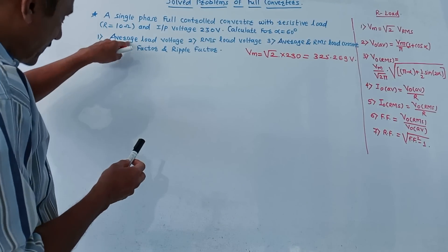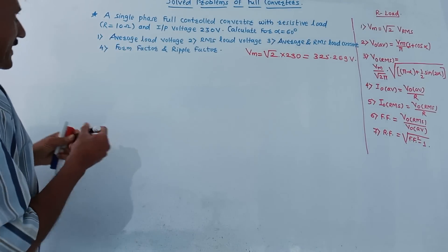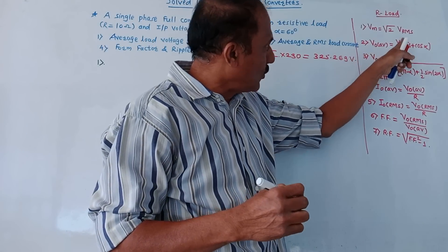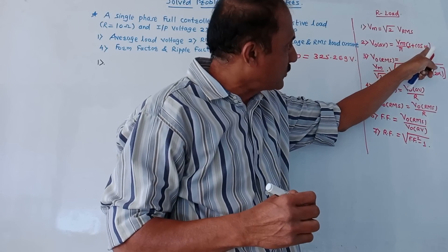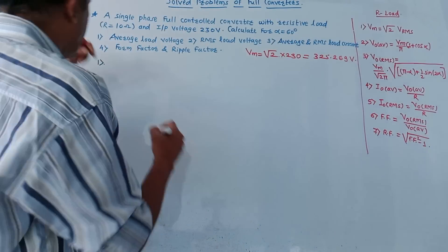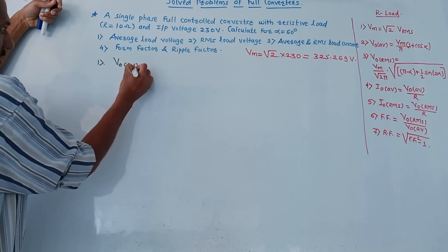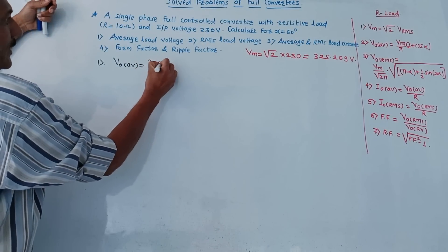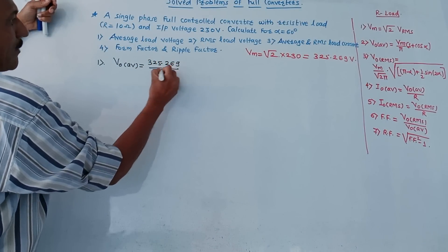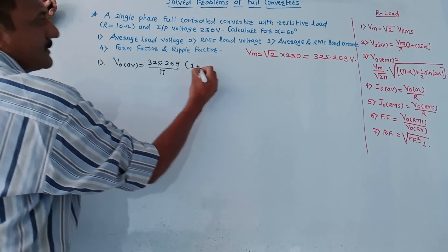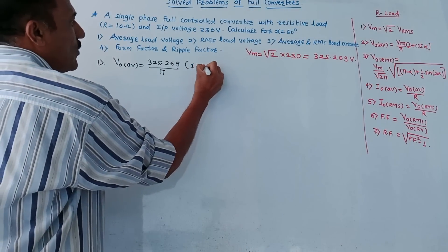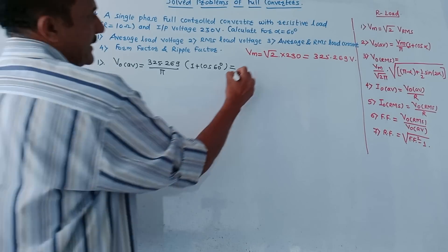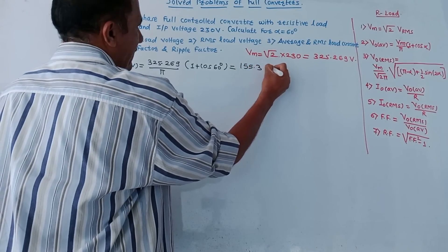Next, the first part of this numerical: average load voltage. We have the formula to calculate average load voltage for resistive load: V0_average = Vm/π × (1 + cos α). Given value of alpha is 60 degrees. So V0_average = 325.269/π × (1 + cos 60°). Solving this on the calculator gives 155.3 volt.